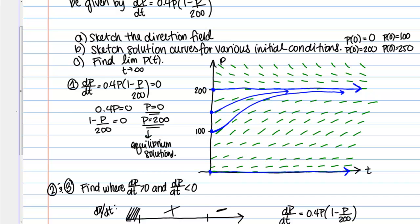Let's do one more at maybe p of 0 equals 150 — same scenario, I'm going to be increasing and then level off as I approach a population of 200. What about p of 0 equals 250? Starting out above the equilibrium solution, here I have negative slopes, so my solution should be decreasing — more steeply at first, but then it levels out and approaches this equilibrium solution at 200. So it seems that no matter what population I start with, besides 0 and 200 which are equilibrium solutions, any other population I start with is going to approach the equilibrium solution of p equals 200.